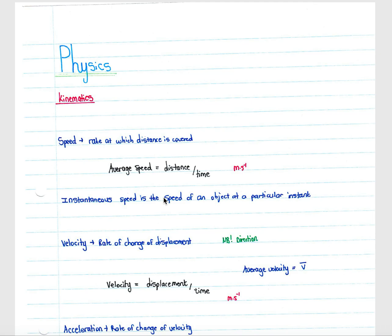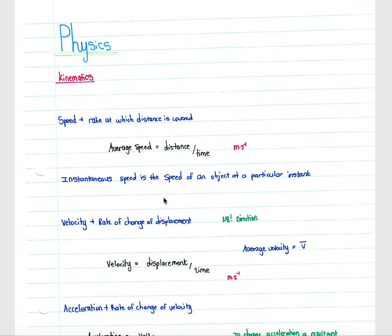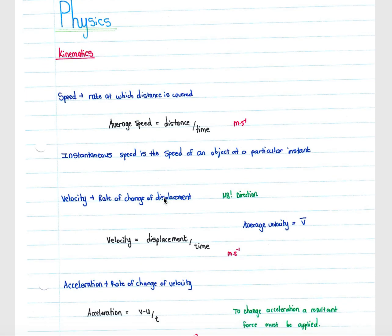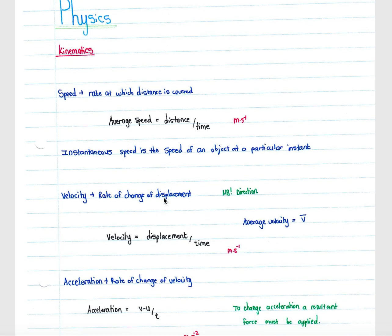Velocity is your rate of change of displacement. Velocity is very different to speed — it takes into account displacement, which is not the total ground an object covers but only the distance between your starting point and your ending point. Velocity is a vector quantity, so it takes into account direction of travel, and it is calculated as displacement over time. Velocity is also measured in meters per second; however, you must include both the unit and the direction of movement.